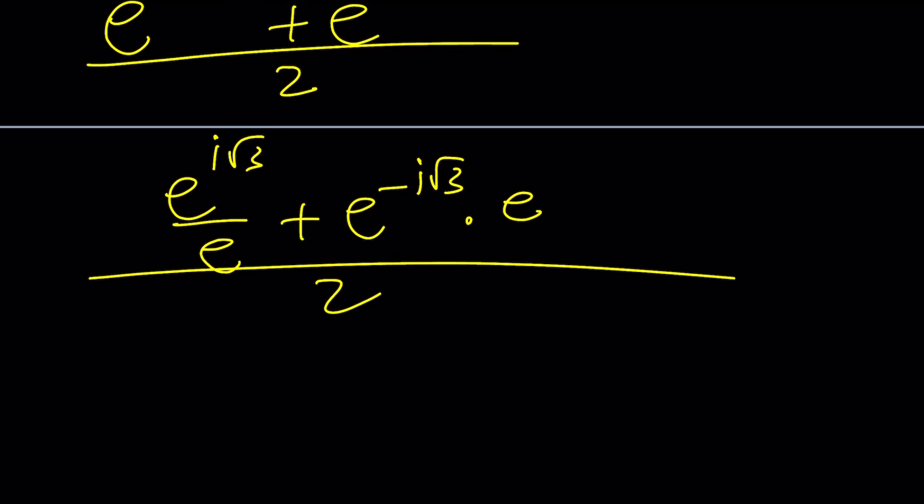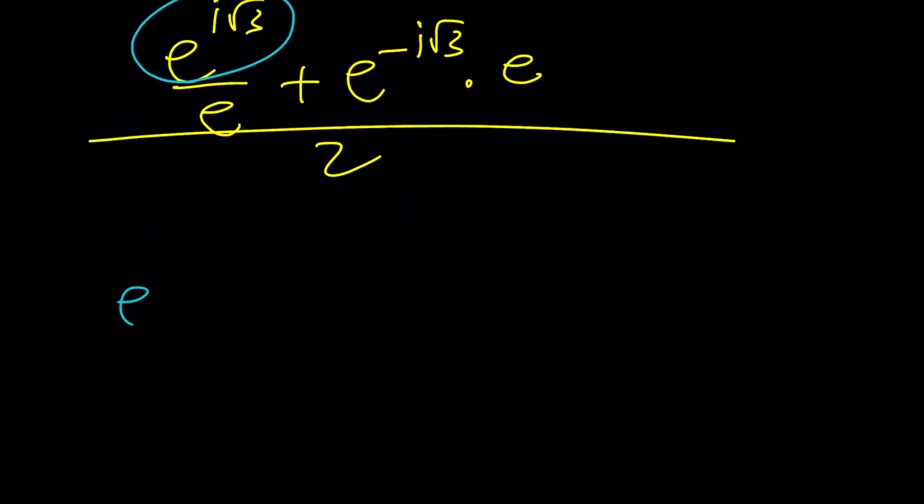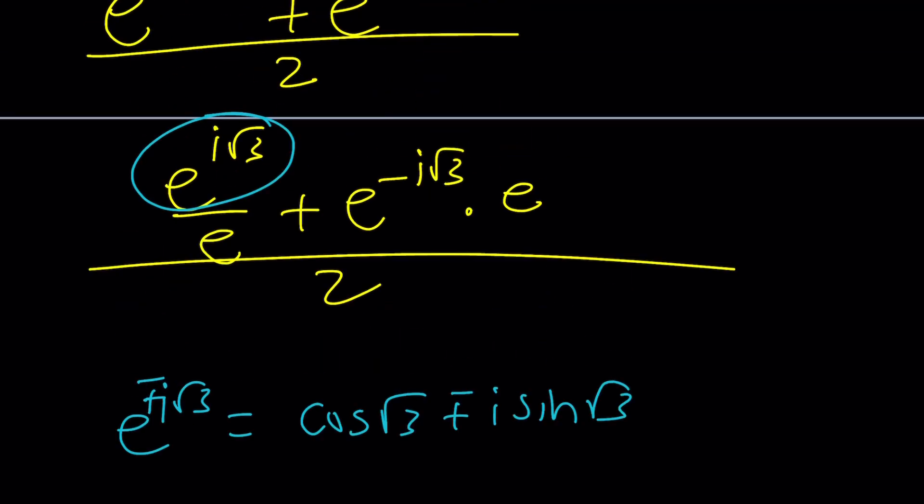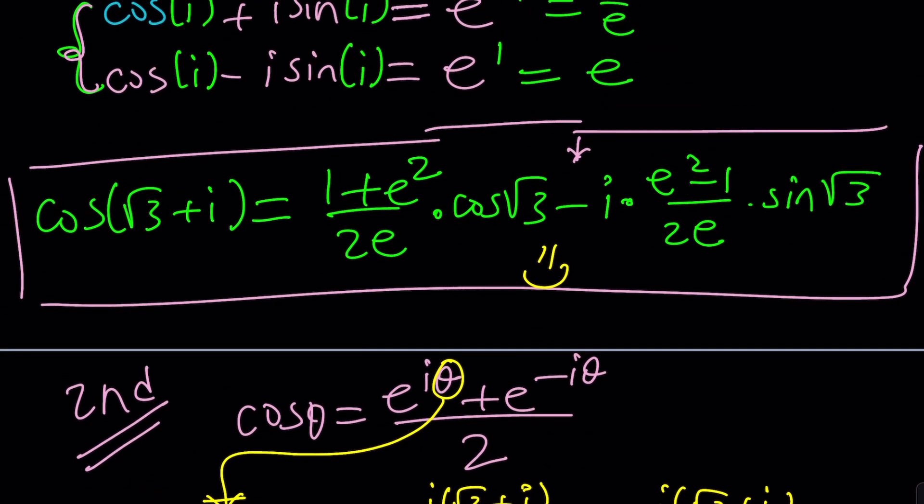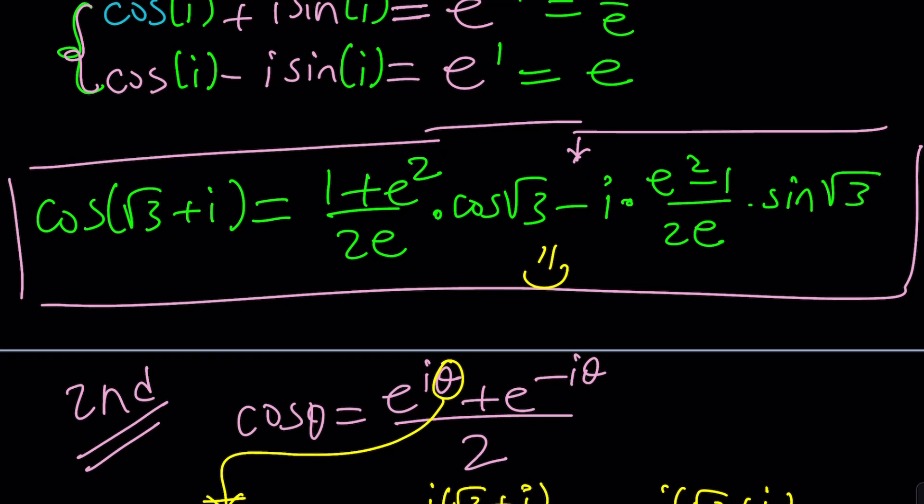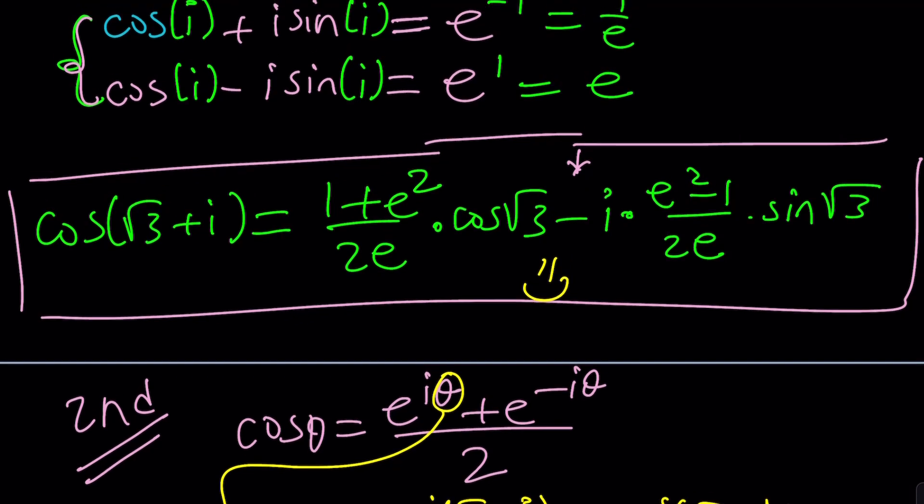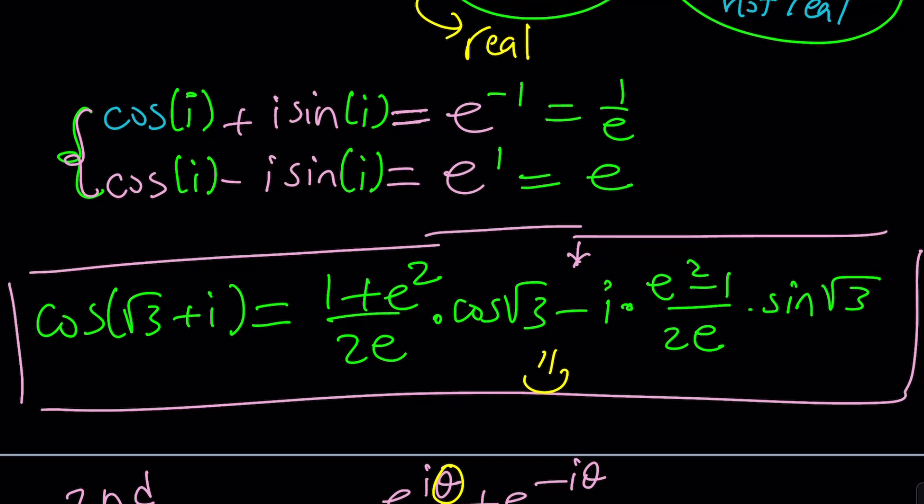And there you go. Now here comes Euler's formula one more time. What is e to the power i root 3? It is cosine of theta. Remember that's root 3 plus i sine root 3. And then for the negative one, it's just going to be plus minus. So let me put the plus minus there so you can kind of figure it out. And if you plug it into this equation, you're going to get the exact same result. And there's actually something called hyperbolic functions. Have you heard about it? And it's basically going to be the same thing. Or is it?